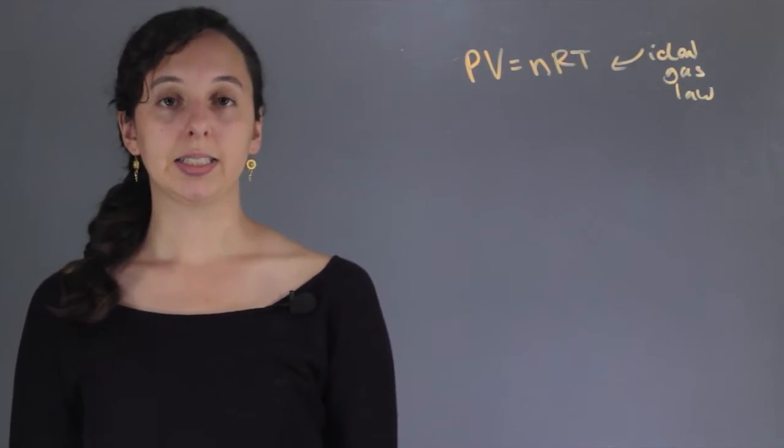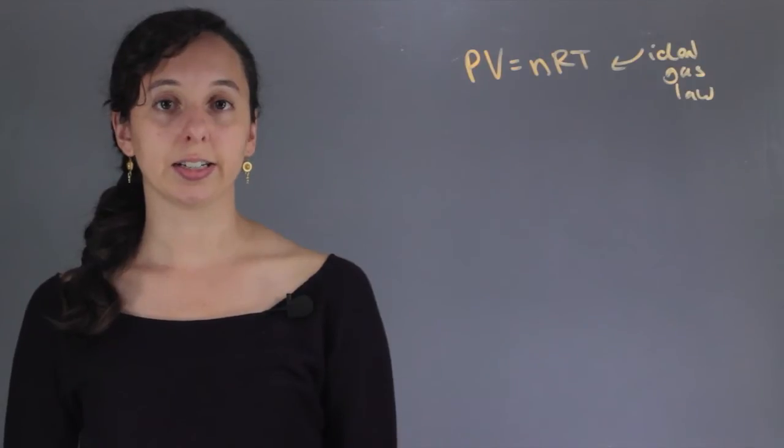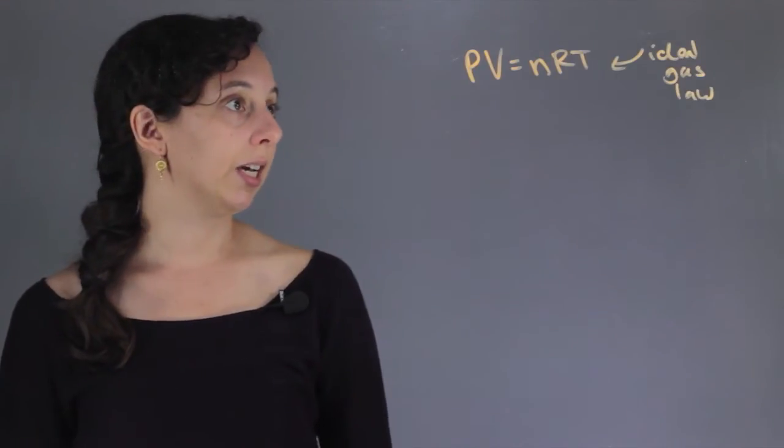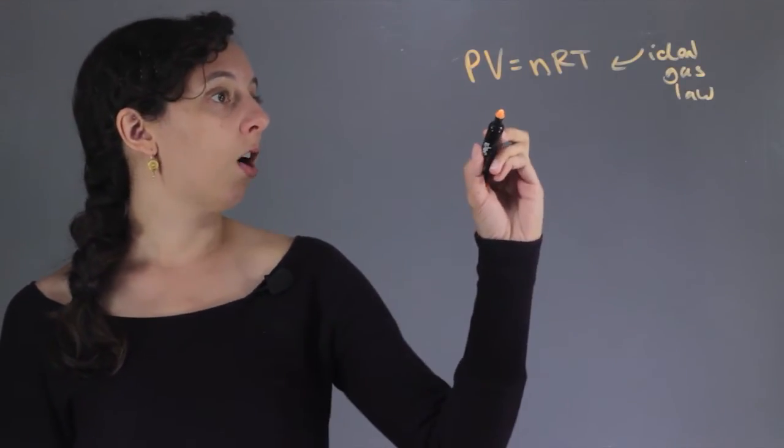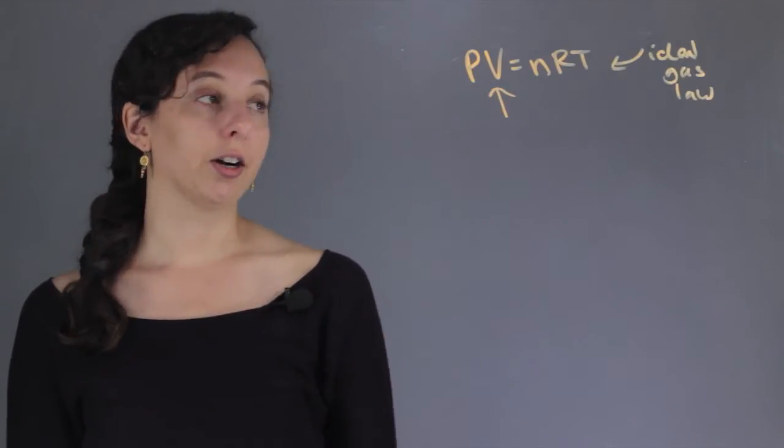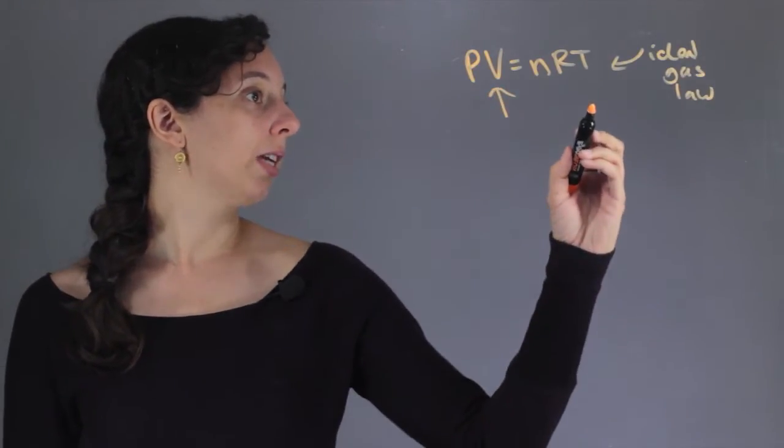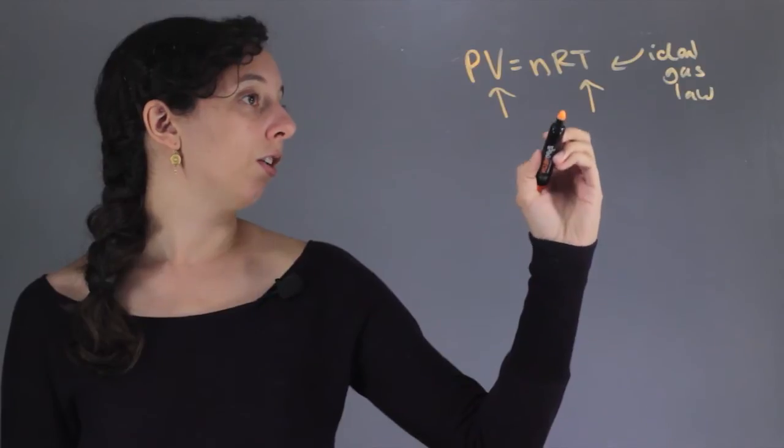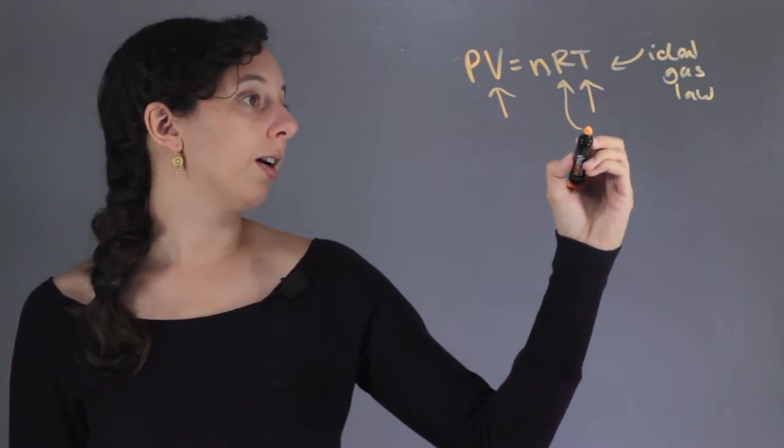Let's say we had some gas in a container and we knew the volume of the container and the temperature, and R we always know because R is a gas constant.